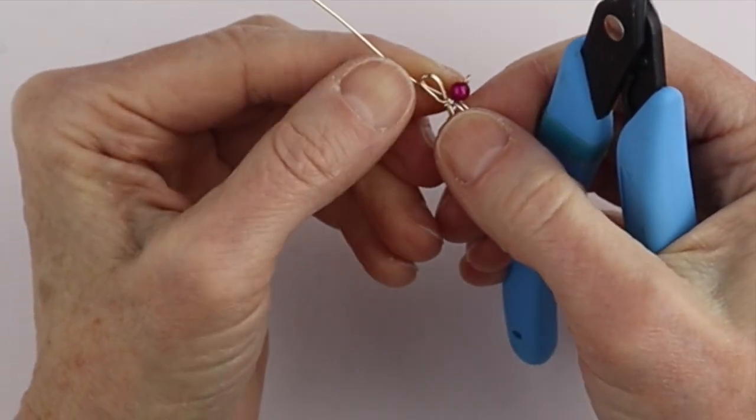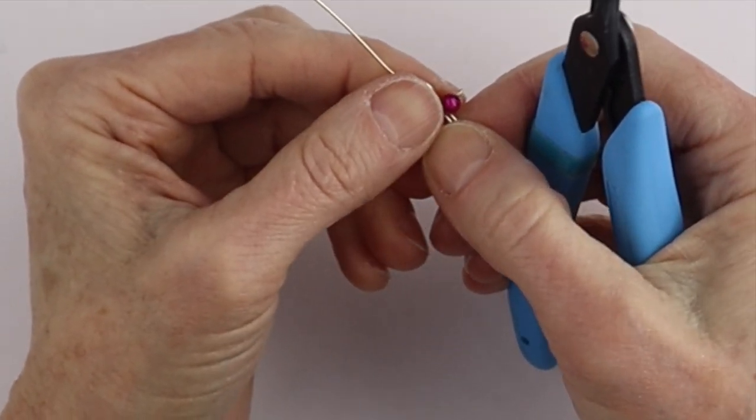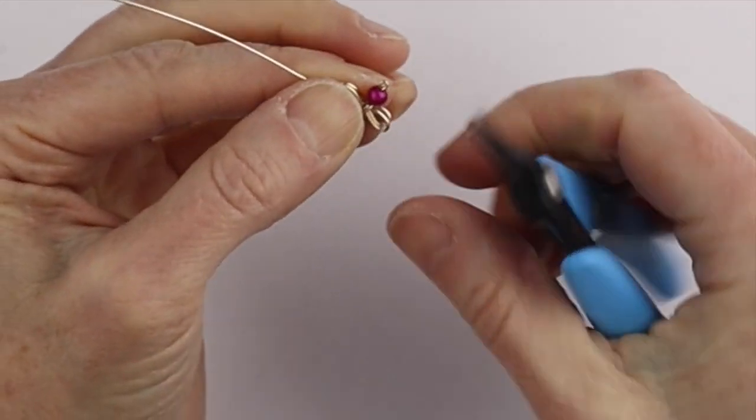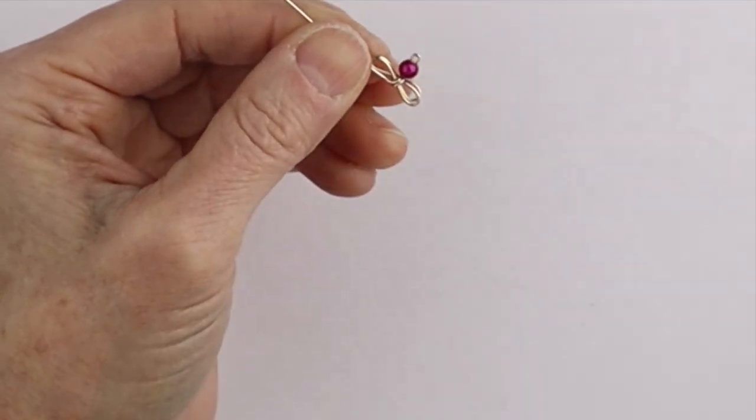So we're just going to make a loop there and just pinch it in. So you can either do the loop parallel or perpendicular. So we're just going to do it that way. And then that makes it look a little more fancy if you can see the loop.